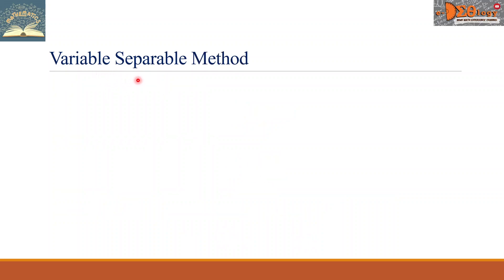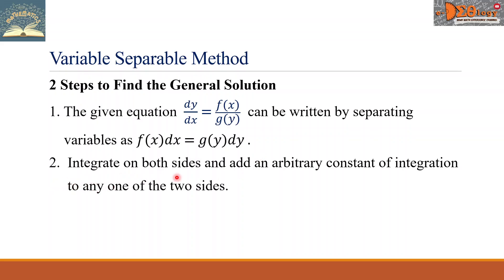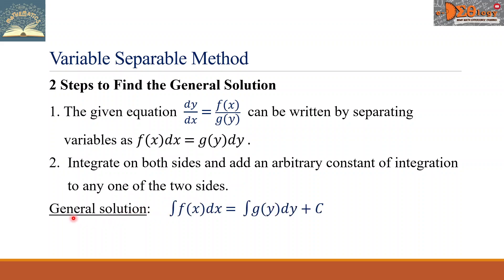Let's go now to the variable-separable method. We have two steps to find the general solution. Step 1: the given equation dy over dx equals f of x over g of y can be written by separating variables as f of x dx equals g of y dy. Step 2: integrate on both sides and add an arbitrary constant of integration to any one of the two sides. Simply, the general solution is: the integral of f of x dx equals the integral of g of y dy plus c.